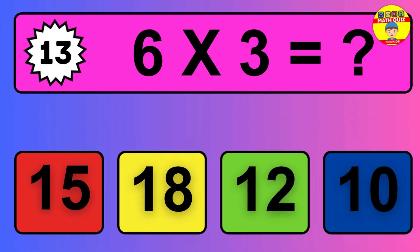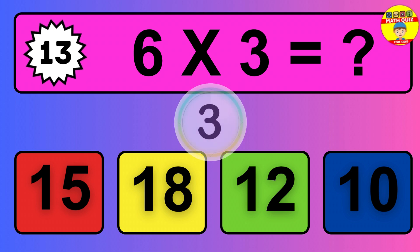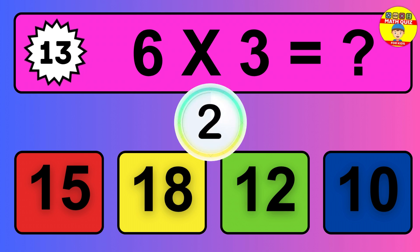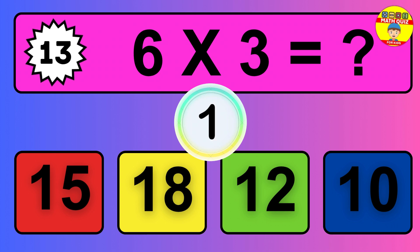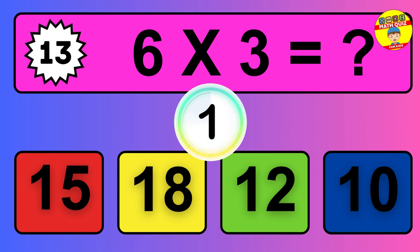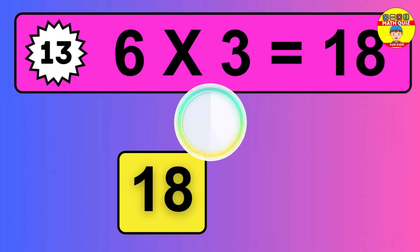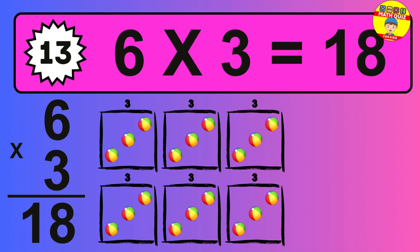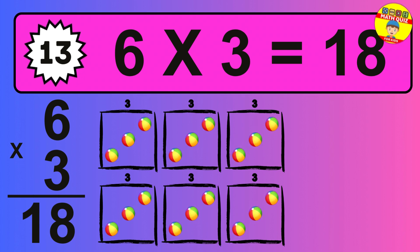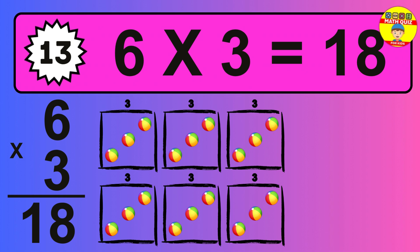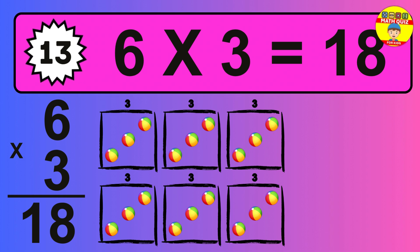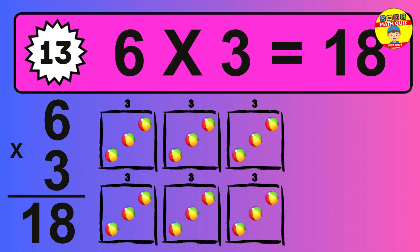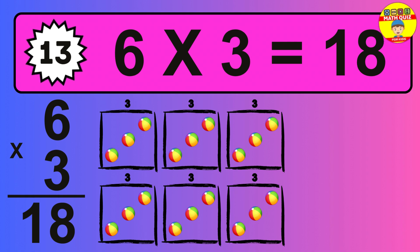Question 13. 6 times 3 equals what? So the answer is 6 times 3 is 18. To calculate, we have 6 groups with 3 balls each one. So how many balls do we have? 18 balls.